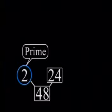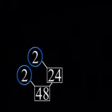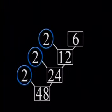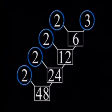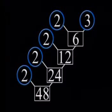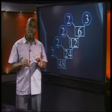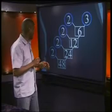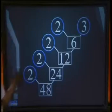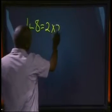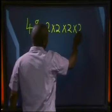We put the prime factor in a blue circle every time. Now look at the two branches. 2 is a factor of 24. 2 goes into 24 twelve times. 12 is 2 times 6. 6 has the factors 2 and 3. 3 is a prime factor, so we have finished our factor tree. All the prime numbers are placed in blue circles. 48 can be written as 2 times 2 times 2 times 2 times 3.